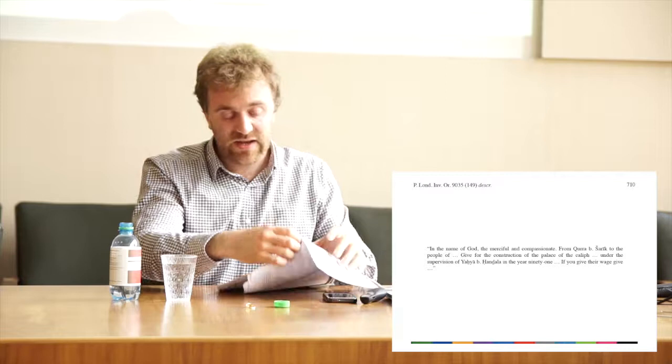Besides the ordinary taxes, monks had also to pay extraordinary taxes, mainly requisitions for the army or the fleet, as those appearing on the slides. They were also paying extraordinary taxes for the construction of specific buildings, and this appears in an ostracon from the monastery of Wadi Sarga dated from 710, where Qurra asks the requisition for workers that should take part in the construction of the Caliph's palace. The construction works have been put under the supervision of a man called Yahya ibn Handala, who is known from literary sources as the one who was in charge of the construction of a great mosque in Fustat.